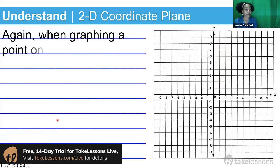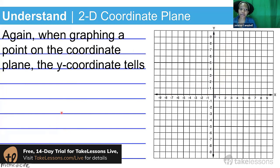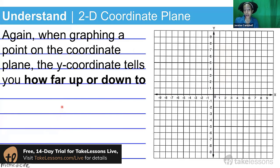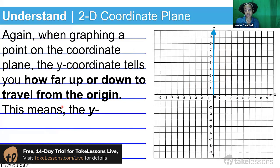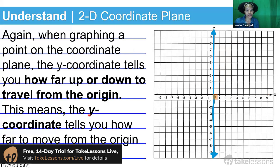When graphing a point on the coordinate plane, the y-coordinate tells you how far up or down to travel from the origin. This means that the y-axis or the y-coordinate would tell you how far to move from the origin parallel to the x-axis.